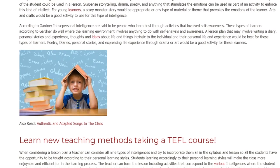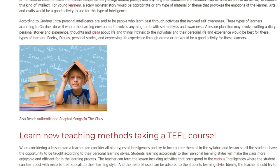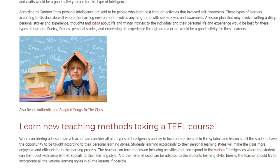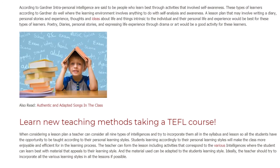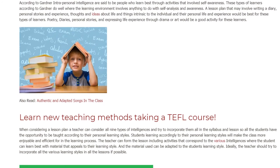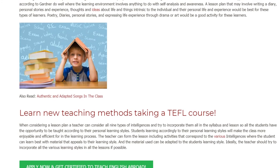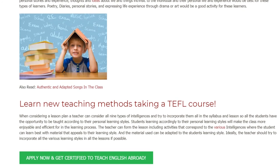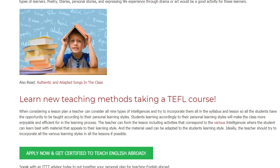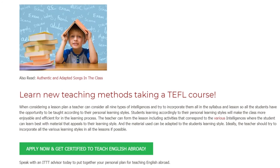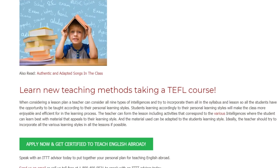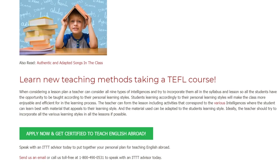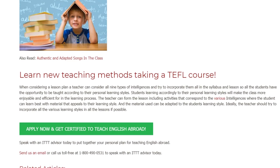When considering a lesson plan, a teacher can consider all nine types of intelligences and try to incorporate them all in the syllabus and lessons, so all students have the opportunity to be taught according to their personal learning styles. Students learning according to their personal learning styles will make the class more enjoyable and efficient. The teacher can form the lesson with activities that correspond to various intelligences, and ideally should try to incorporate all the various learning styles in all lessons if possible.